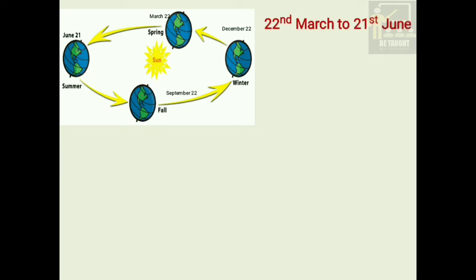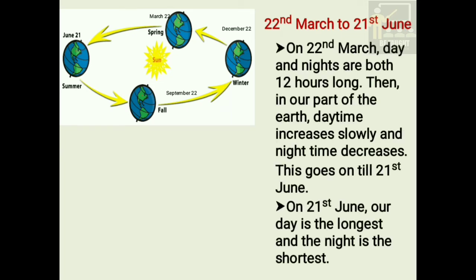As you can see in the picture, it shows different dates and months. We shall learn about the duration of day and night from 22nd March to 21st June. On 22nd March, day and night are both 12 hours long. Then in our part of the earth, daytime increases slowly and nighttime decreases. This goes on till 21st June. On 21st June, our day is the longest and the night is the shortest.